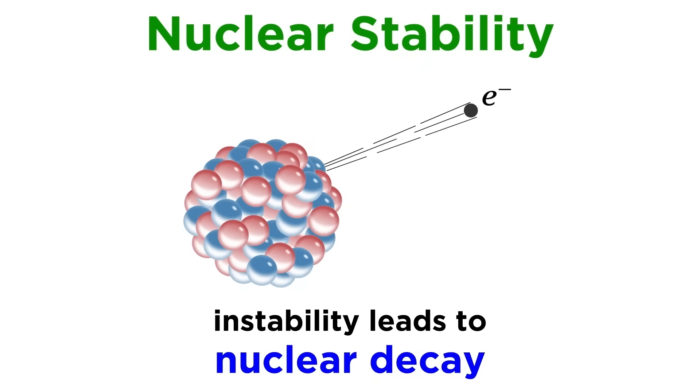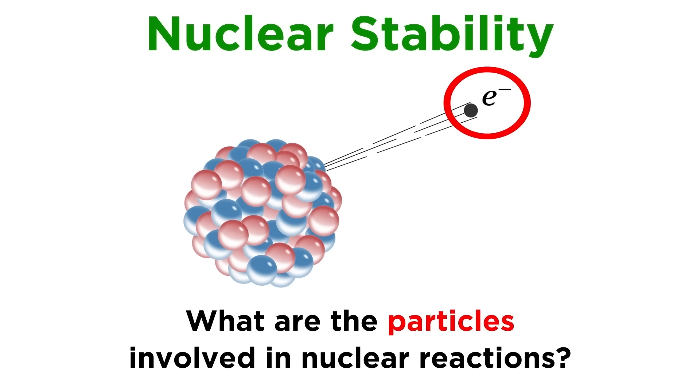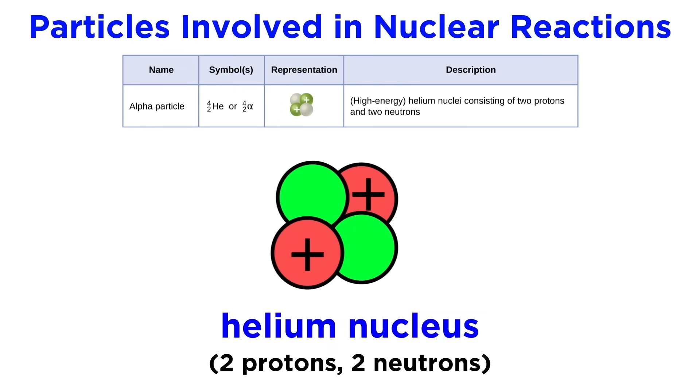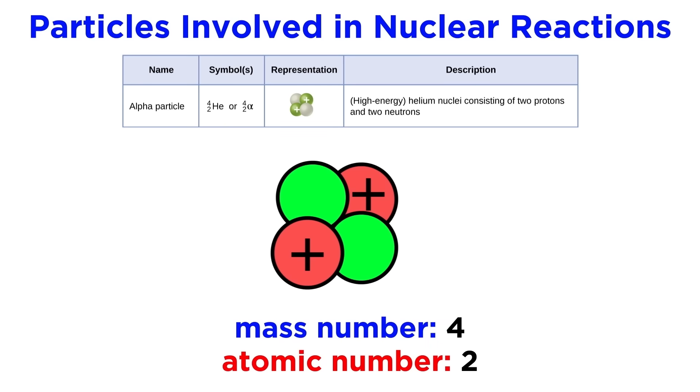When a nuclide is unstable, some kind of radioactive decay may occur to make the nuclide more stable. So what are the particles involved in these nuclear reactions? Let's go through them one at a time. The first is the alpha particle. When this particle was discovered, we did not know what it was, so it was simply named alpha, but we later found out that it is a helium nucleus, so we can refer to it with either the alpha symbol or the helium symbol. This has a mass of four atomic mass units, so the mass number will be four, and since there are two protons, the atomic number will be two.